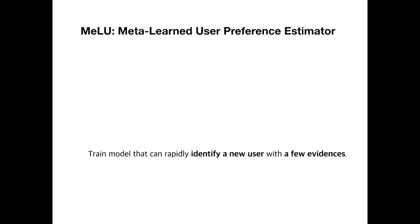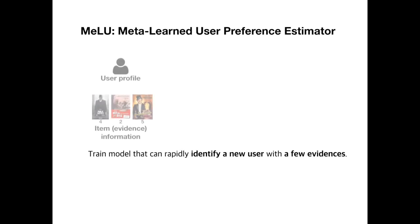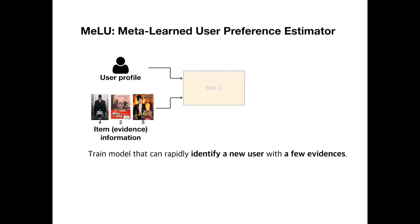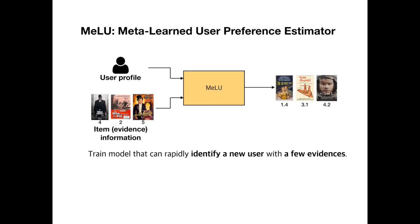Similar to a content-based recommender system, Malu accepts user profile and item information. Malu identifies the user based on the evidence, and finally, Malu suggests items that the user may like.